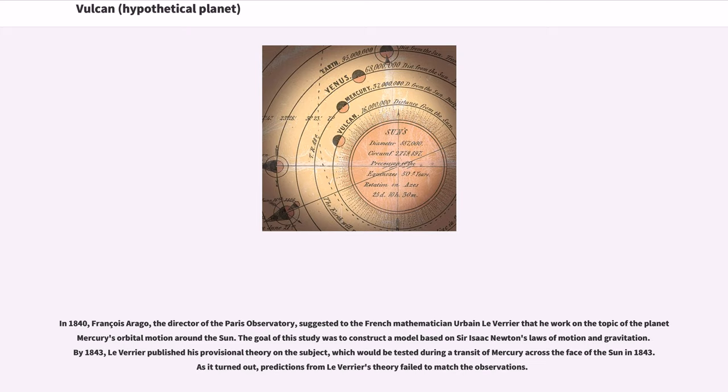The goal of this study was to construct a model based on Sir Isaac Newton's laws of motion and gravitation. By 1843, Le Verrier published his provisional theory on the subject, which would be tested during a transit of Mercury across the face of the Sun in 1843. As it turned out, predictions from Le Verrier's theory failed to match the observations.